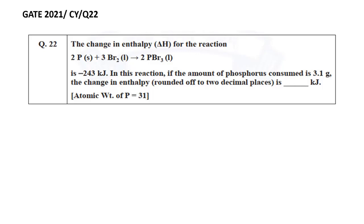The question is: the change in enthalpy (ΔH) for the reaction 2 P + 3 Br₂ → 2 PBr₃ is -243 kJ. In this reaction, if the amount of phosphorus consumed is 3.1 g, the change in enthalpy is _____ kJ.